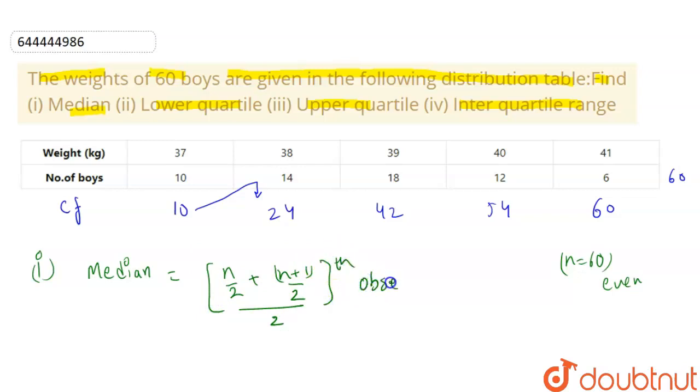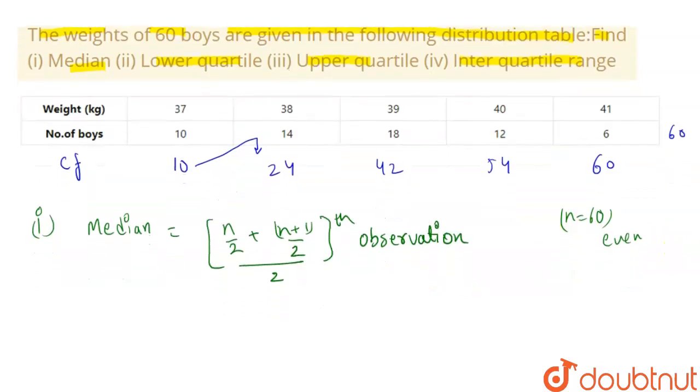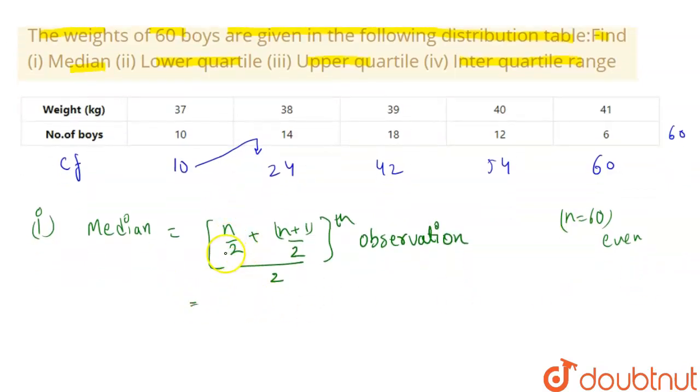30 plus 31st observation. So this becomes 60 by 2, 30 plus 31st observation. 30 plus 31st observation by 2.